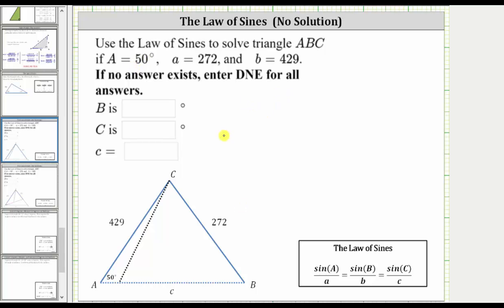Looking at the triangle below, I set it up where this is angle A that measures 50 degrees. Side A is opposite angle A with a length of 272 units, and I labeled this angle B, and therefore the opposite side would be side B. That has a length of 429 units, and therefore this would be angle C with side C opposite angle C.